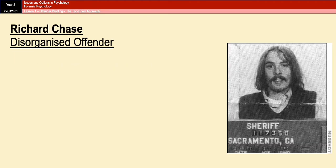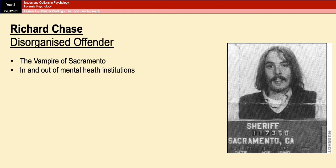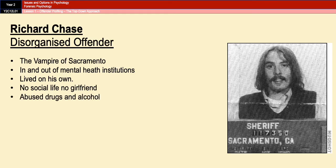If you compare that to Richard Chase — a disorganised offender known as the Vampire of Sacramento because he drank the blood of animals and also his victims — he was in and out of mental health institutions, lived with his parents, had no social life or girlfriend, and abused drugs and alcohol. He also had no victim type, so much so that one of his murders involved a middle-aged woman, a man, a six-year-old, and a 22-month-old, all in the same household. His murders were opportunistic and not planned — he literally walked the streets checking doors, and by his own admission, if the door was open it meant you were welcome, and if locked, he would leave.